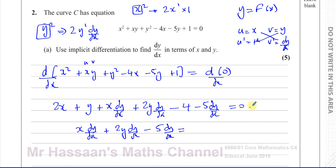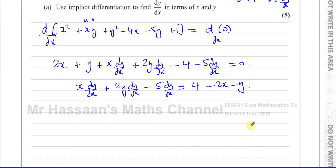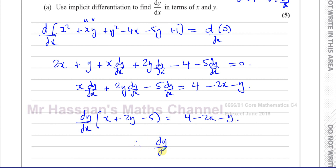Moving the non-dy/dx terms to the other side — subtracting 2x and y and adding 4 to both sides — and factoring out dy/dx: (x + 2y − 5)(dy/dx) = 4 − 2x − y. Therefore dy/dx = (4 − 2x − y) / (x + 2y − 5), which is the expression for dy/dx in terms of x and y.